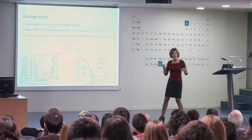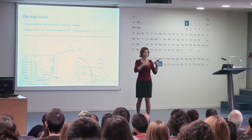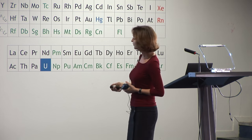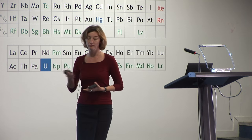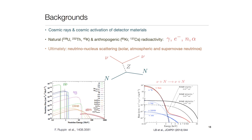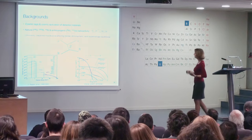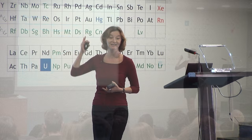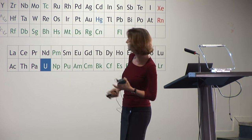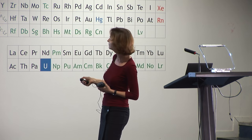We also have a lot of background to deal with. First, cosmic rays and cosmic-ray activation of detector materials — to deal with these, we go deep underground, where there are many underground laboratories in the world. Then there is natural radioactivity everywhere: uranium, thorium, potassium — and man-made radioactivity such as krypton in the air, which is a big problem for xenon-based experiments, coming from Fukushima, nuclear bomb tests, and also cesium.